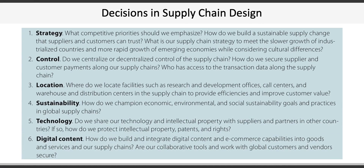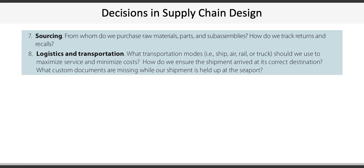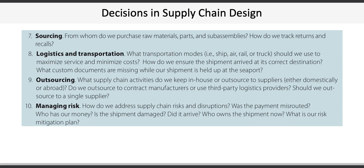The sixth category is about digital content: how do we build and integrate digital content and e-commerce capability into goods, services, and our supply chains? The seventh category asks questions around sourcing: from whom do we purchase raw materials and parts? Next is logistics and transportation: what transportation modes do we use — ship, air? How do we ensure the shipment arrives at its destination? Nine is about outsourcing: what supply chain activities do we keep in-house, and what do we outsource to outside manufacturers or contractors? The tenth category is about managing risk: how do we address supply chain risks and disruptions? Who has our money? Did the product arrive?